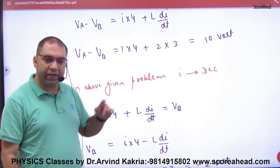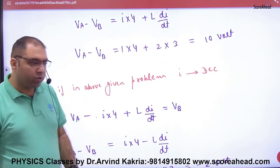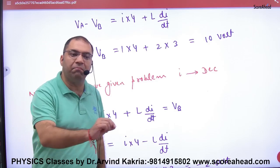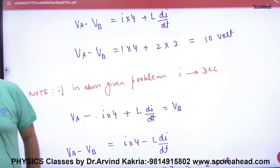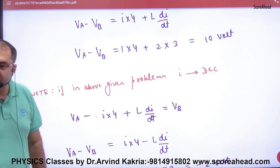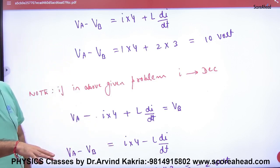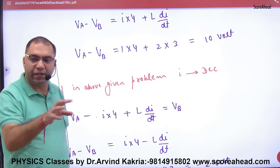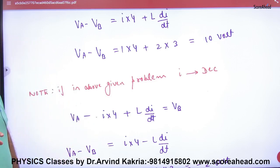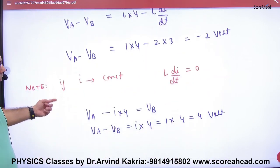If current decreases, then where di/dt you will put minus 3. This is important. So di/dt, the rate of change of current, if increasing then di/dt plus 3, and if decreasing then di/dt minus 3.